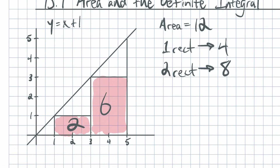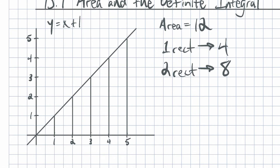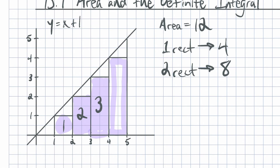We've got these big gaps where we're counting nothing. Let's increase the number of rectangles. Let's cut these each in half, making sure all rectangles fit under the graph, so we're getting an underestimate. Now each of these rectangles is one unit wide—there are four of them. The first is one unit tall, area is 1. The next is two units tall, area is 2. The next is three units tall, area is 3. The last is four units tall, area is 4. Adding all that up we get 10. With four rectangles, we get an estimate of 10, which is closer to the true area of 12.